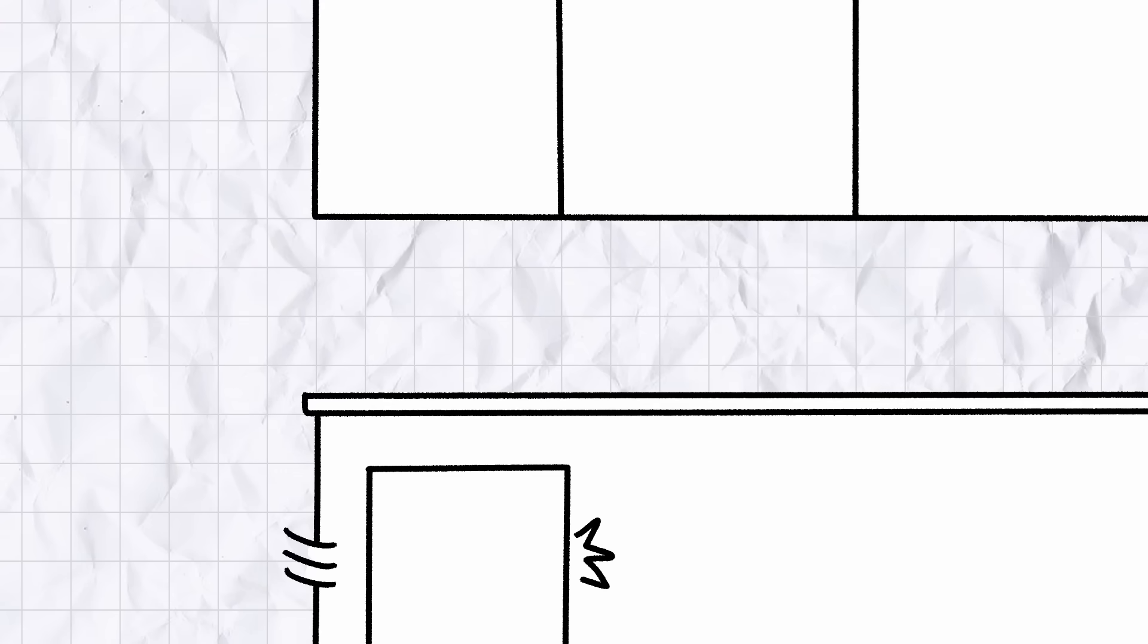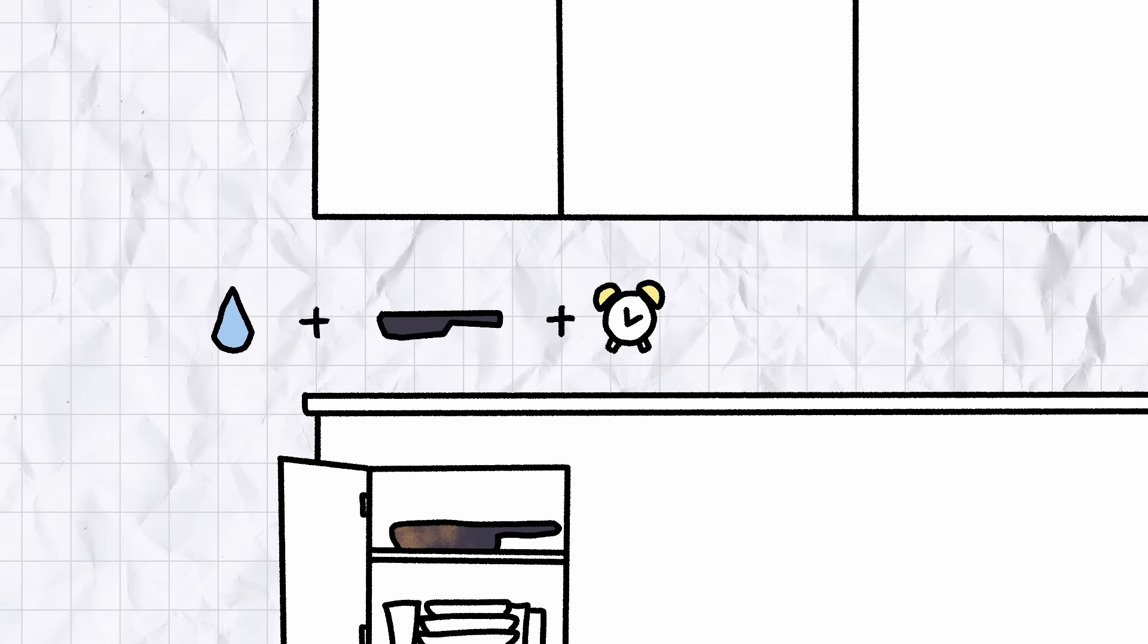You also need to make sure to dry it properly once you finish using it. Here's a bit of inorganic chemistry you can take to culinary school. Beads of tap water plus cast iron pan plus several days in a poorly ventilated kitchen cupboard yields a knackered bit of cookware and a very annoyed housemate.